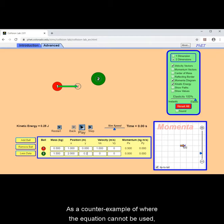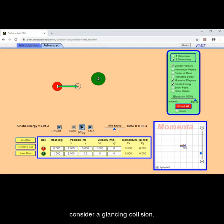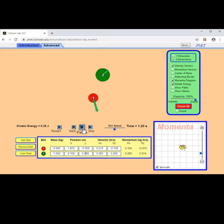As a counterexample of where the equation cannot be used, consider a glancing collision. Calculate the relative velocity in the x-direction and y-direction before the collision, and compare with the relative velocity in the x-direction and y-direction after the collision.